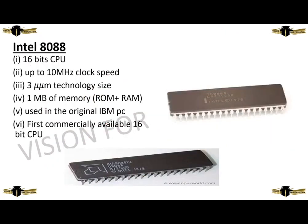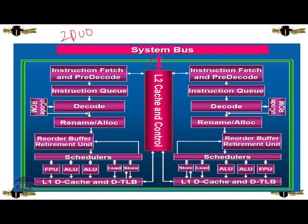Now we are going to discuss about the Intel 8088 processor. It is a 16-bit CPU with up to 10 megahertz clock speed, 3 micro units technological size, 1 MB of memory consisting of ROM and RAM, used in original IBM PCs. It is the first commercially available 16-bit CPU. The L2 system bus is bidirectionally connected to the L2 cache and controller.